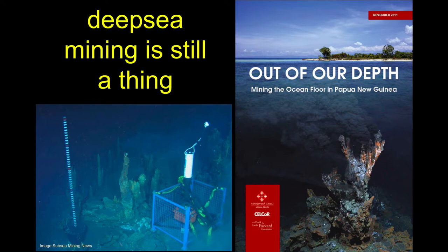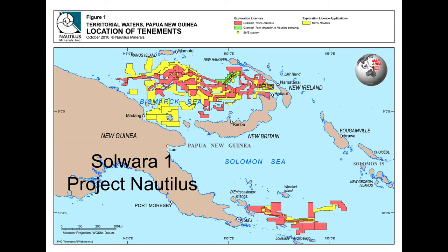So this is what exists right now. This is Solara 1, off Papua New Guinea in the South Pacific, a little bit north of Australia. We're looking at leased lands and initial exploitations.